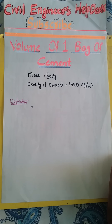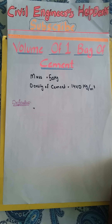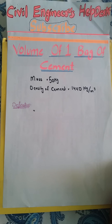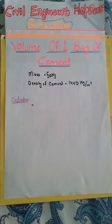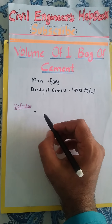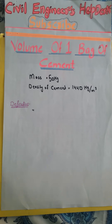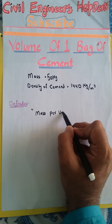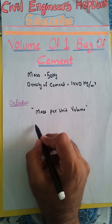Before we calculate the volume of one bag of cement, we must know the definition of density. Please try to remember what is the definition of density — I am pausing the video here. I hope you remember it, but if you forget, don't worry. Density is defined as mass per unit volume.